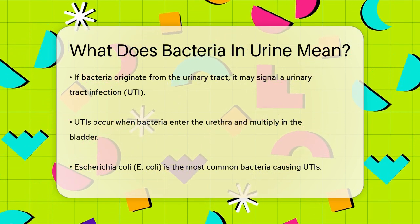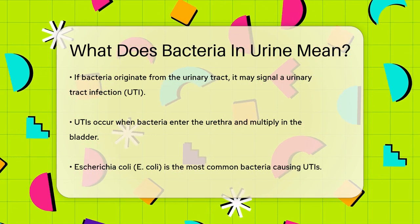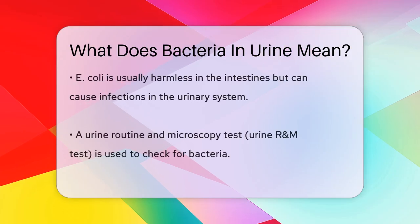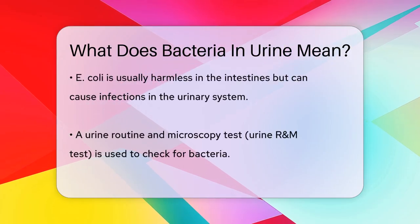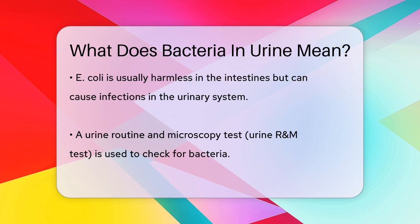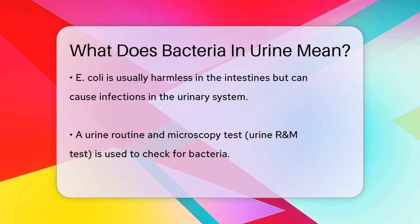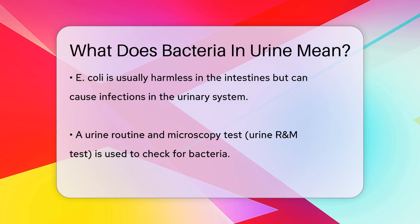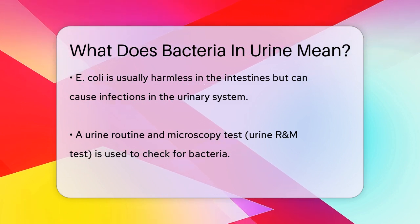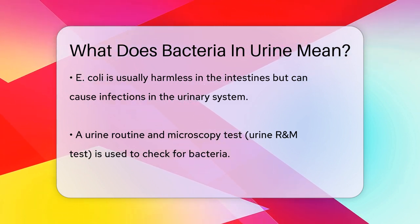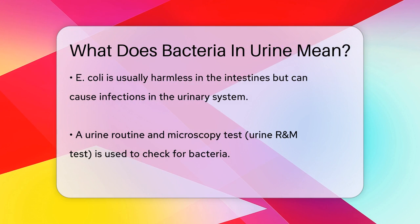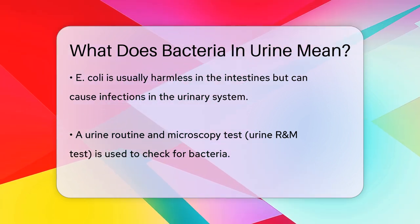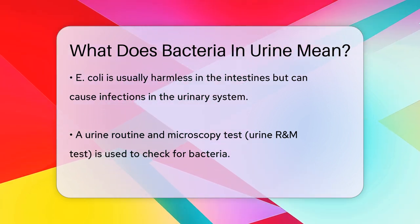When a urine test is done, it's called a urine routine and microscopy test, or urine RNM test. This test looks at the urine sample under a microscope to see if bacteria are present. The results can show different levels of bacteria: no bacteria; scant bacteria, 1 to 10 bacteria in 10 visual fields; some bacteria, 4 to 50 bacteria; many bacteria, up to 100 bacteria; or numerous bacteria, over 100 bacteria.